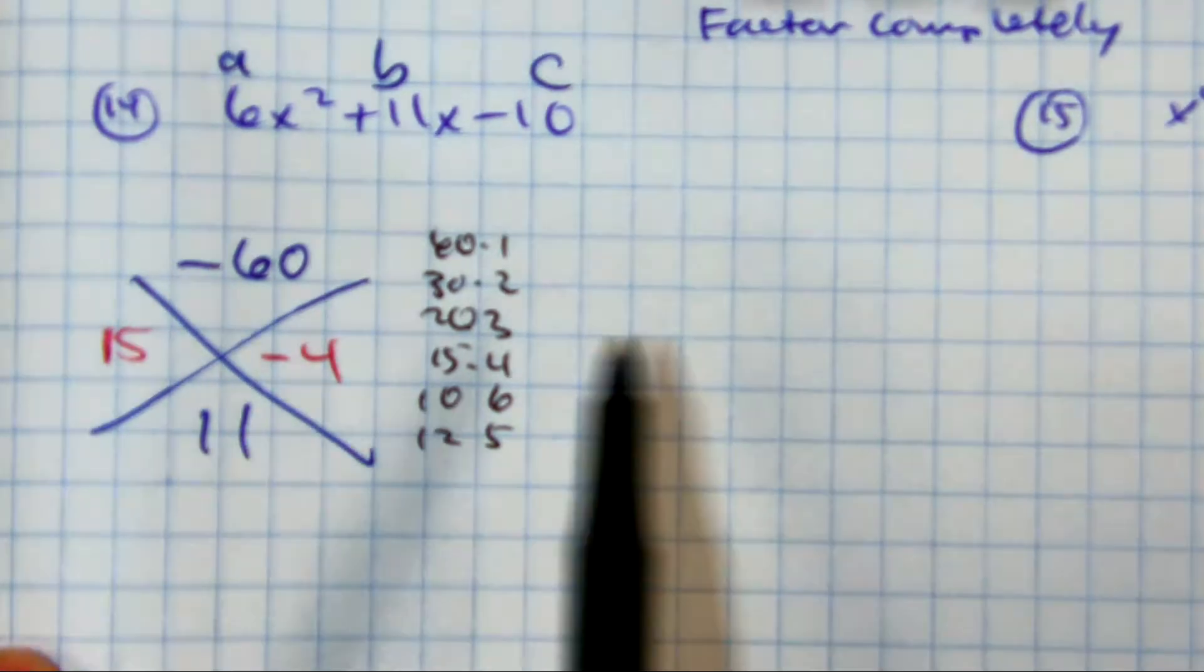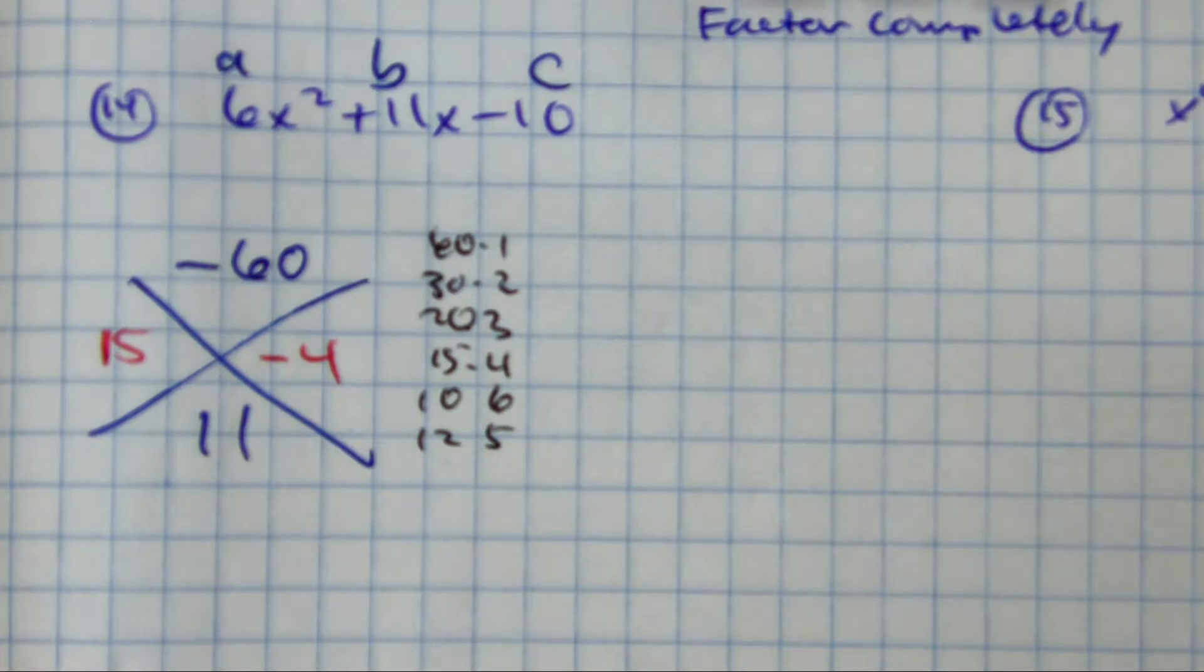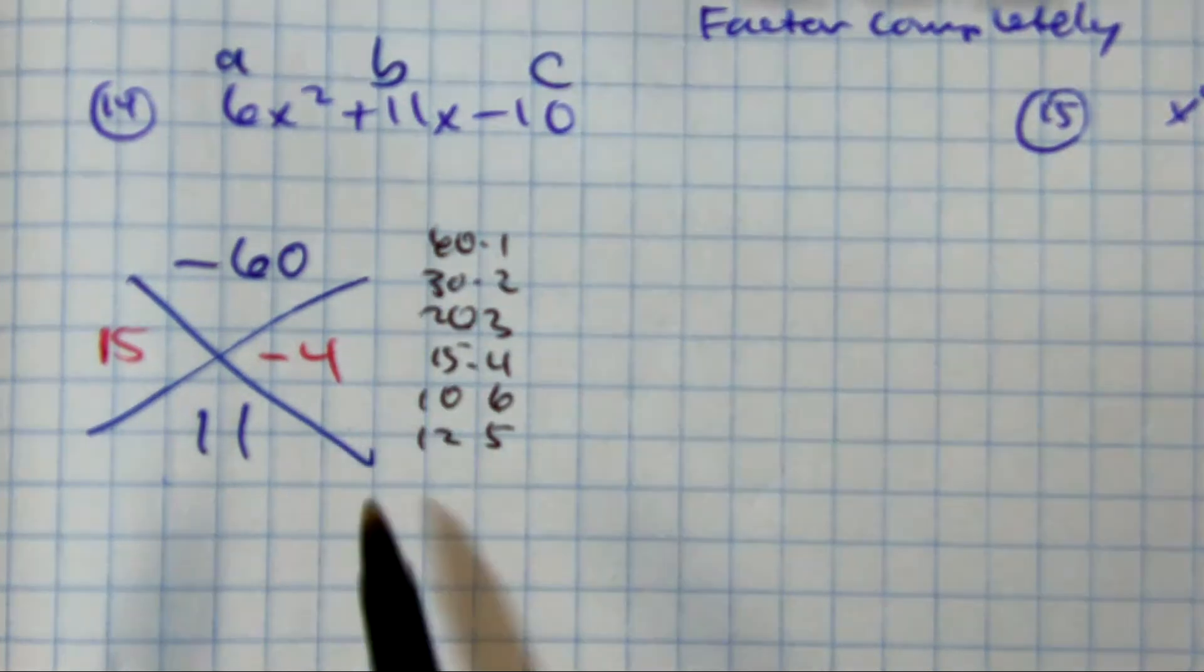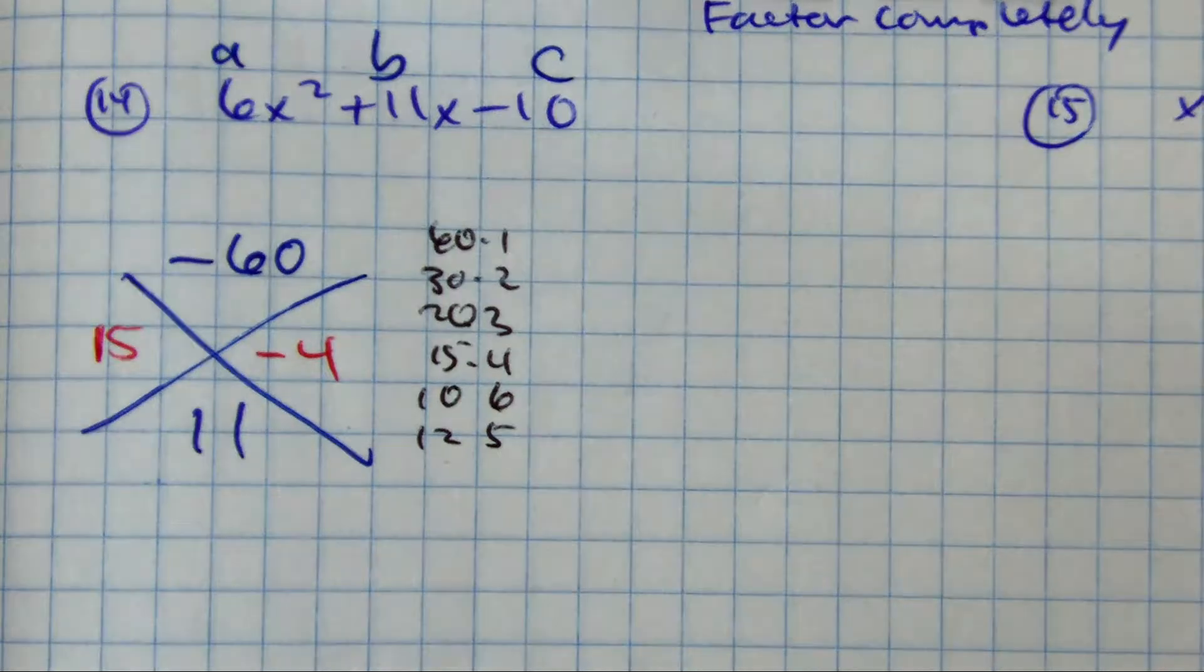So notice this strategy. You get to visualize the numbers, right? And I put the bigger number on the left-hand side so that you can kind of subtract going across. Does that make sense?